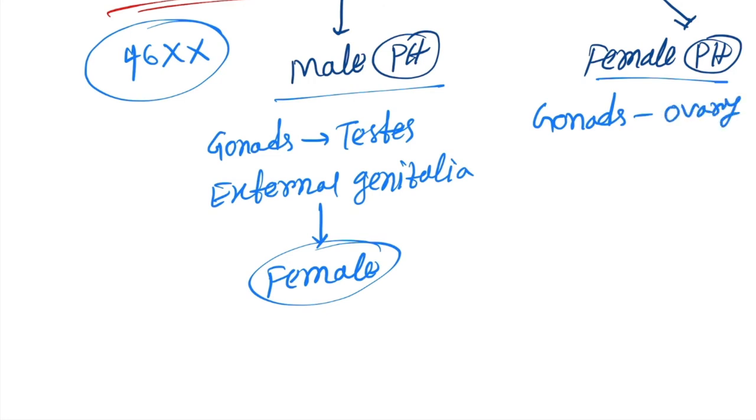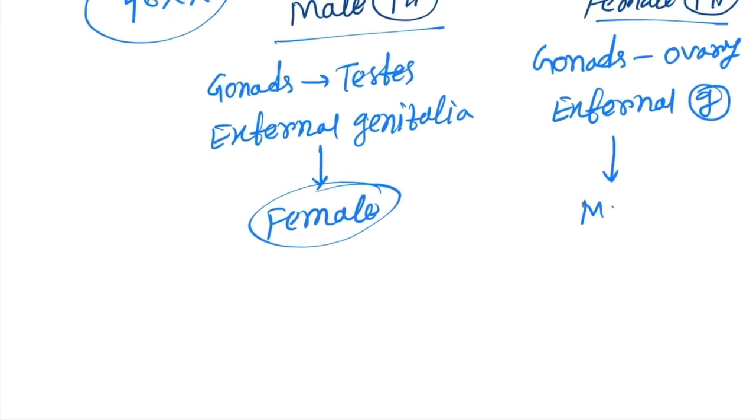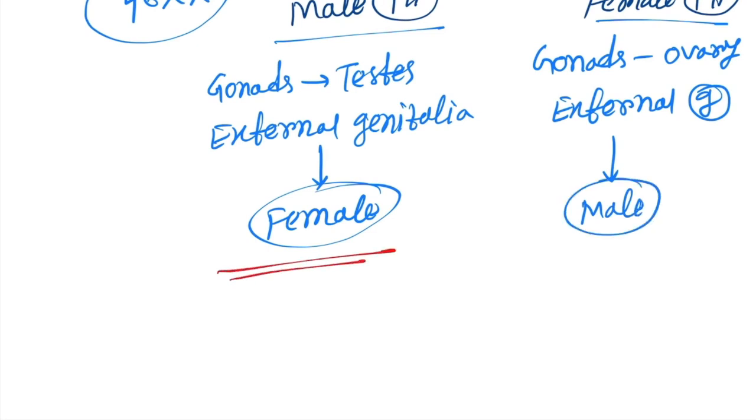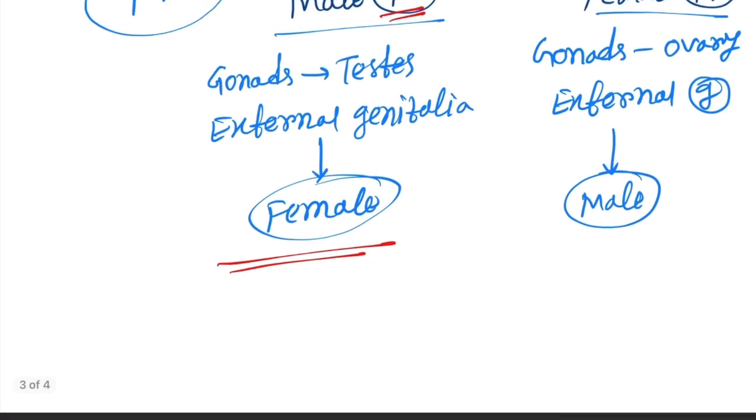And in female pseudohermaphroditism, the gonads will be ovary, that is normal, but external genitalia will be looking like male.